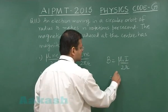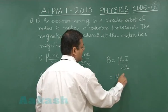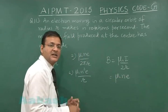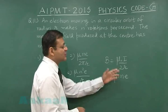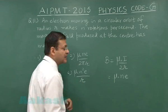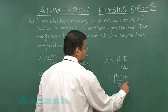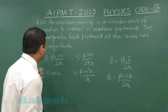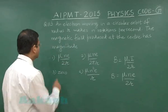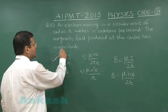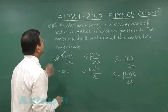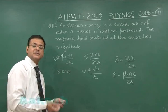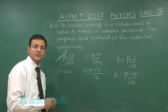If it is making n rotations per second, then n times e — that much charge per second — is rotating, and that equals the current. So the expression becomes mu-naught n-e by 2r. That is the standard expression for the magnetic field, and the correct answer is option one for question 113.